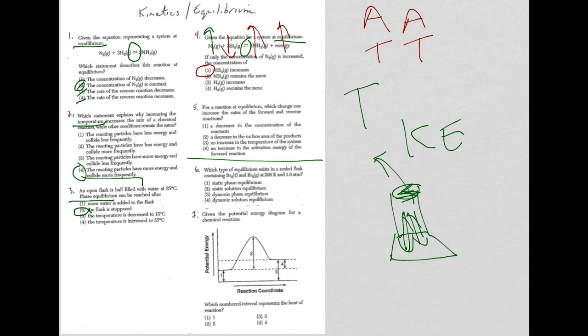For question 5, we have a reaction at equilibrium, which change can increase the rates of the forward and reverse reactions. So we want to increase both of them. Well, decreasing the concentration of the reactants is going to throw off the equilibrium. Because I'm going to be taking something, so the rate of one or the other will go faster to try to relieve that stress.